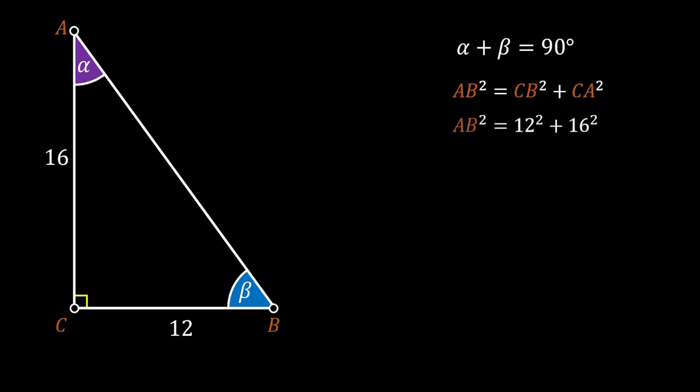Now we will just substitute our values and simplify. And we will get that AB squared must be equal to 400, which means that the hypotenuse AB must be equal to 20.